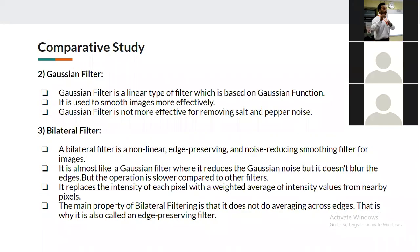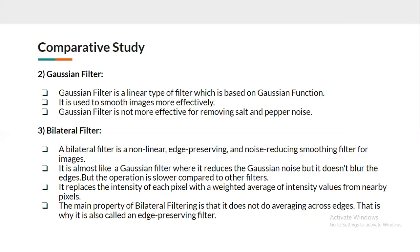The Gaussian filter is a linear type of filter based on the Gaussian function. It is used to smooth images more effectively. However, the Gaussian filter is not effective for removing salt-and-pepper noise, which is why we also use a bilateral filter in our project.